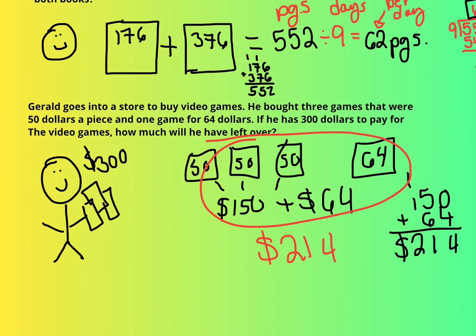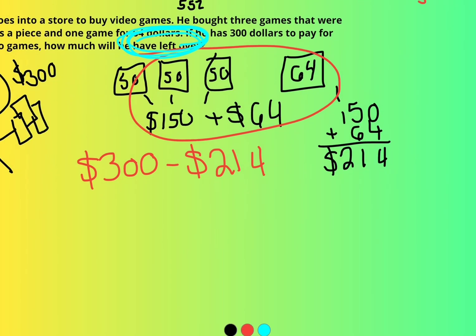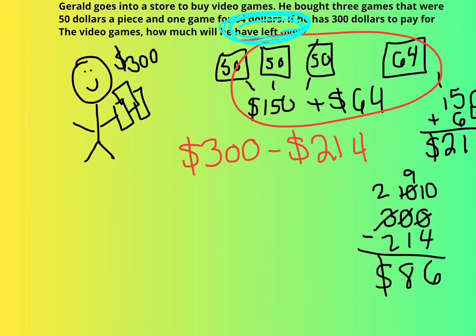And Ryan, we know he has enough money because he goes up to the register and he has $300 in his hand. And the question is, how much does he have left over? To figure out how much he has left over, I'm going to have to subtract $300 minus $214. Borrow that, zero becomes a ten. Ten becomes a nine. This ten becomes a ten. Ten minus four is six. Nine minus one is eight. Two minus two is nothing. So that means that afterwards, Ryan is going to walk out of the store with three games and he's going to have $86 left in his pocket.